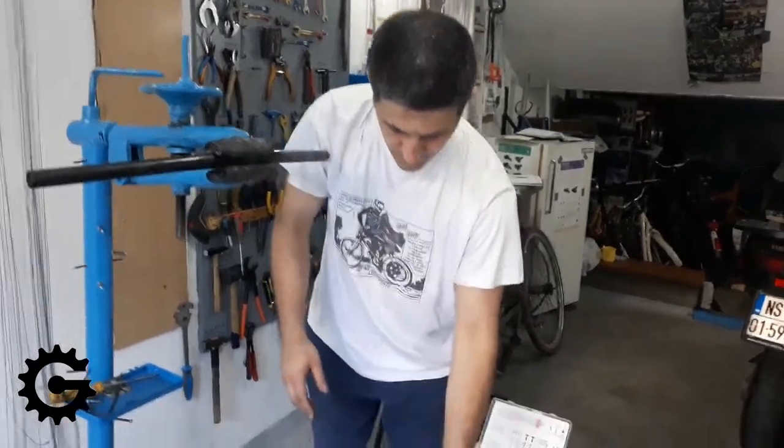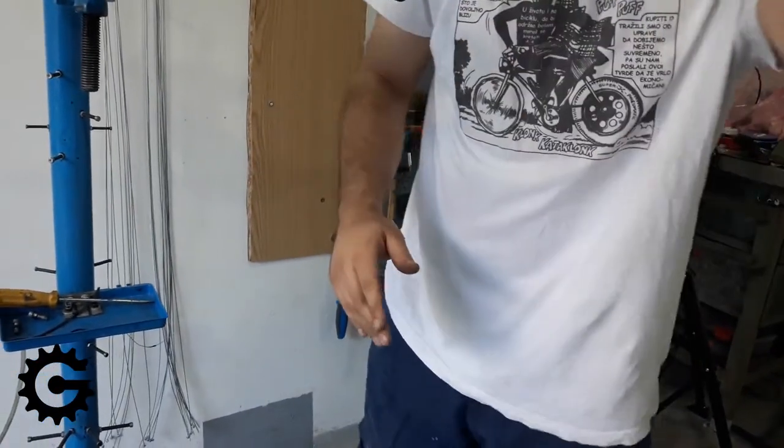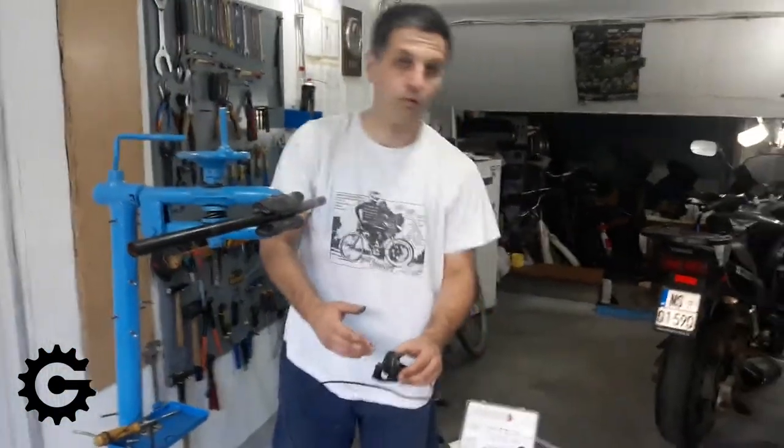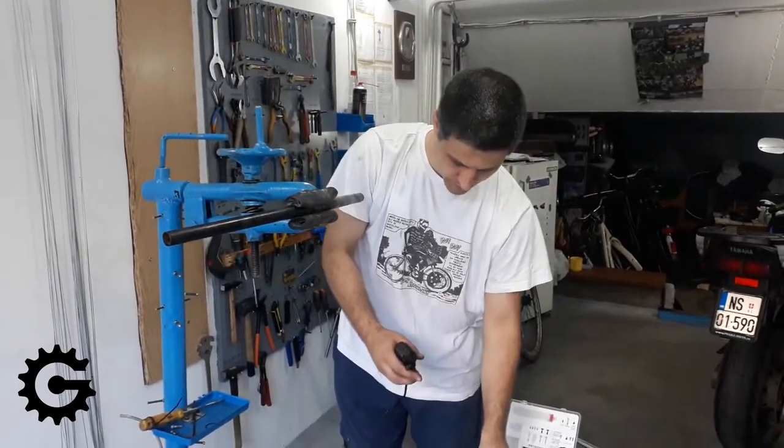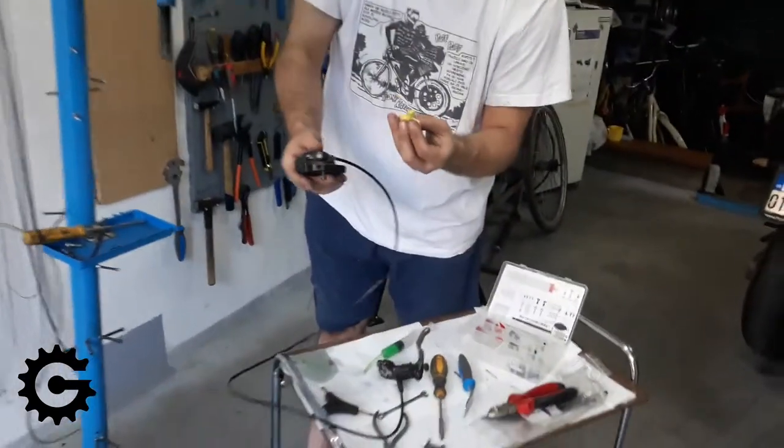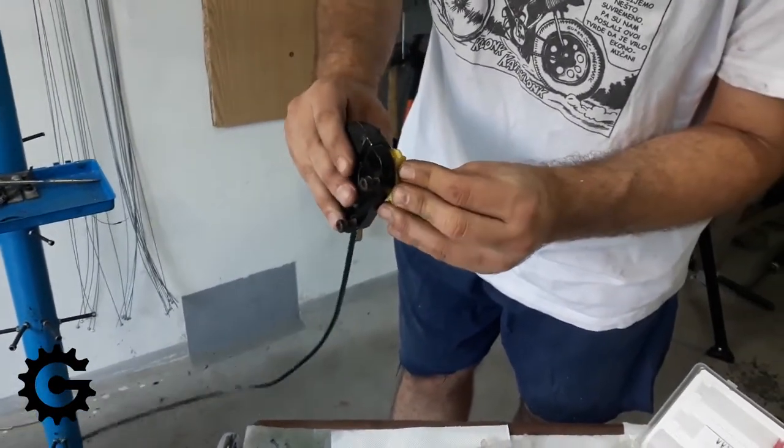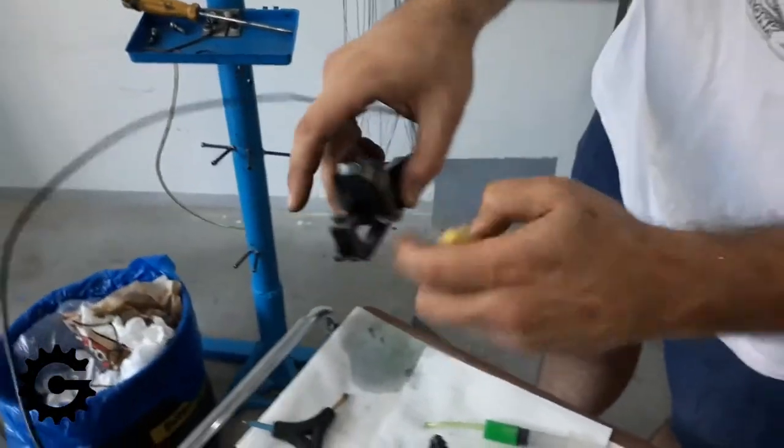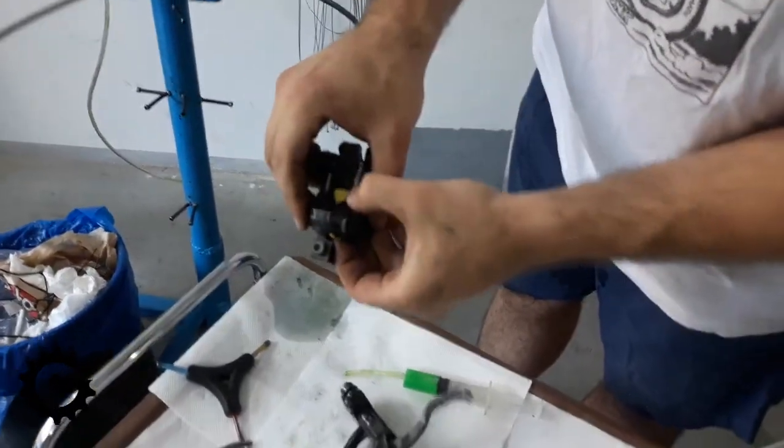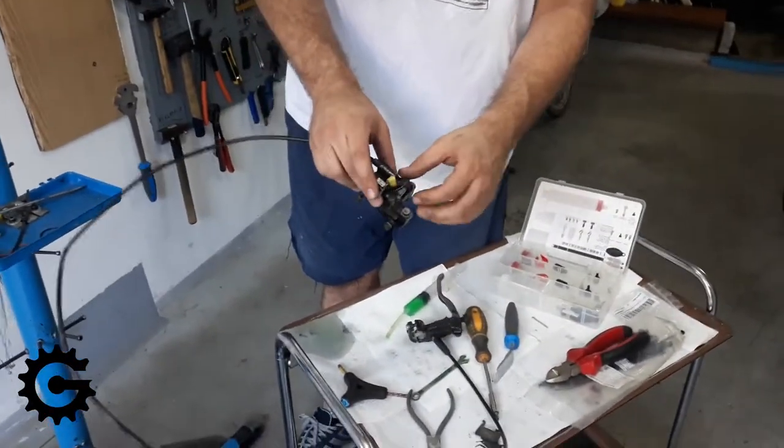After cleaning both brake pistons, use a tool like this to push them all the way back so you can insert the bleeding block. Sometimes these brake mounts get in the way, so you need to loosen the bolts that hold them. Okay, the bleed block is in. Now I'll use this improvised pin to prevent it from dropping out accidentally.